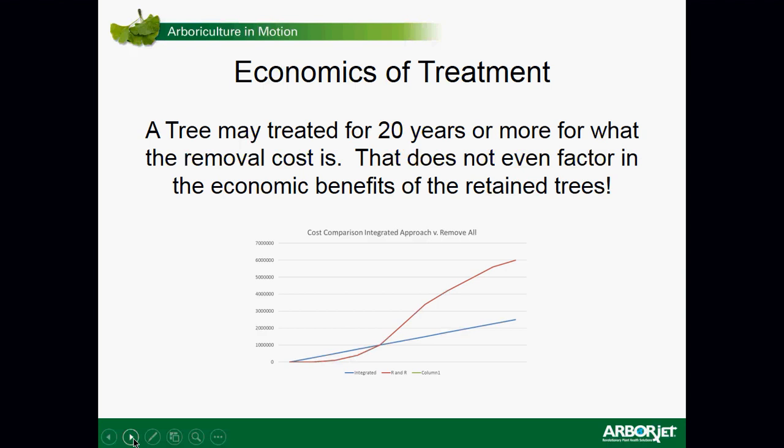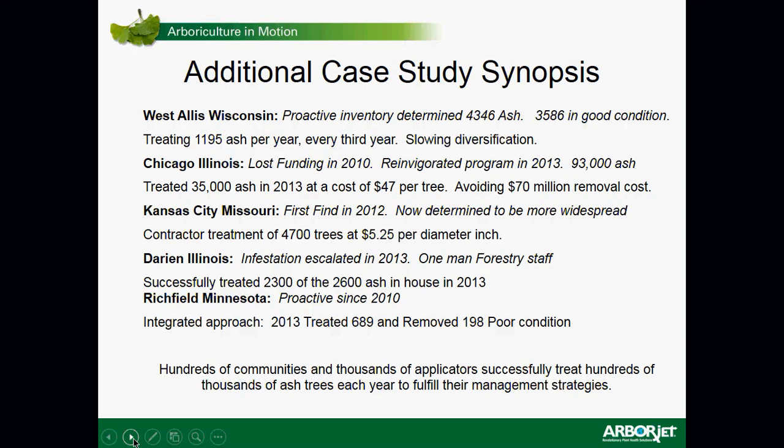On the economics of treatment: a tree can be treated for 20 years or more — whether by a contractor or a municipality doing it themselves — for what removal costs. The same equation holds for homeowners with a tree that might cost over $1,300 to remove; they could treat that tree for as long as they're in the property for what removal and replacement would cost. An integrated approach that maintains healthy trees and removes only poor-condition trees is going to save a community money over time. There are many case studies and testimonials from communities large and small — feel free to reach out to your ArborJet representative.